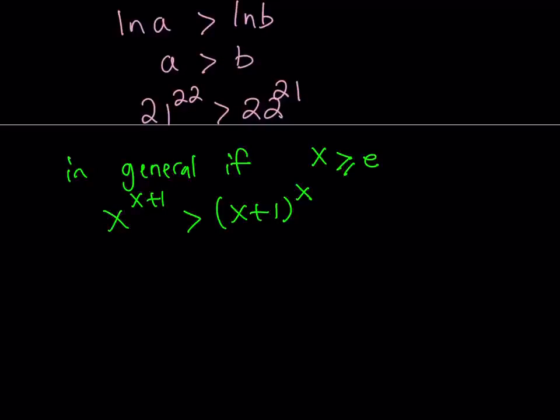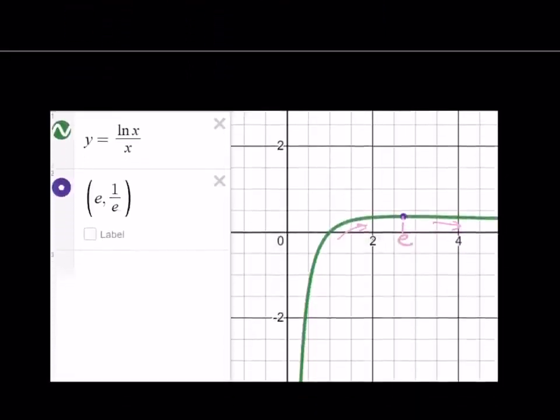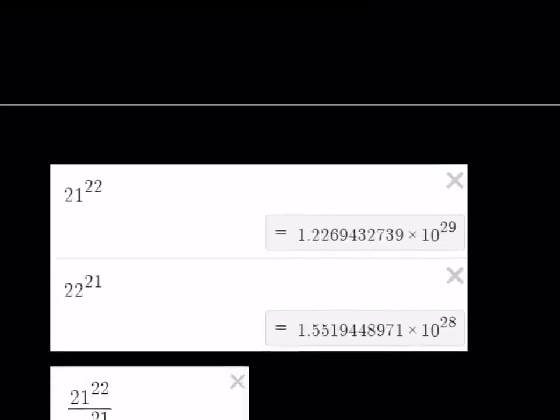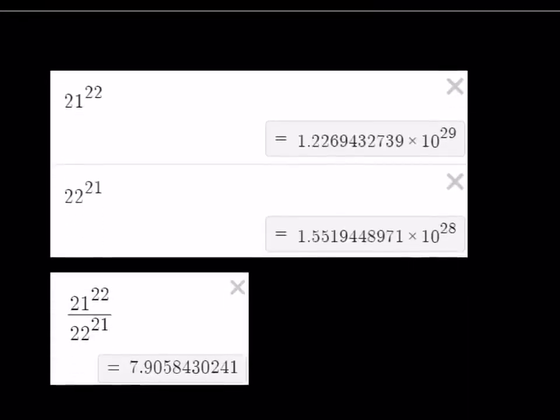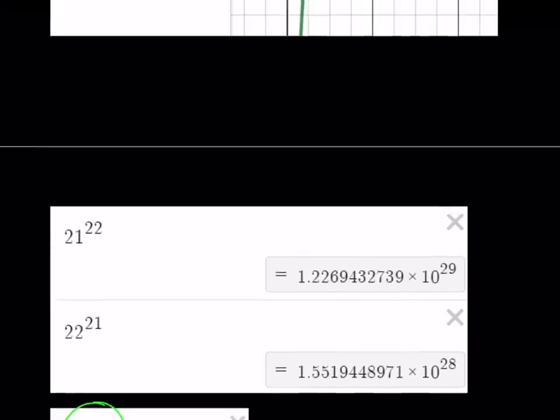Now we're pretty much done, but I'd like to show you a numerical comparison here. That's the graph, and here's the numerical comparison. Those are the values, and you can see that they're pretty close. One of them has 10 to the power of 29, the other one is 10 to the power of 28. And when you look at their ratio, you kind of see that one of them is about 8 times the other number. So 21 to the power of 22 is about 8 times larger than 22 to the power of 21.